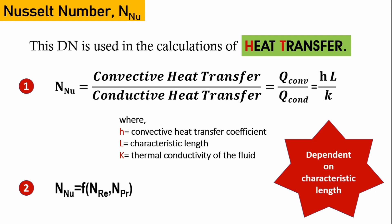Looking at the first equation, the Nusselt number is a ratio of convective heat transfer to conductive heat transfer. It is also equal to HL/K, where H is the convective heat transfer coefficient, L is the characteristic length, and K is the thermal conductivity of the fluid.